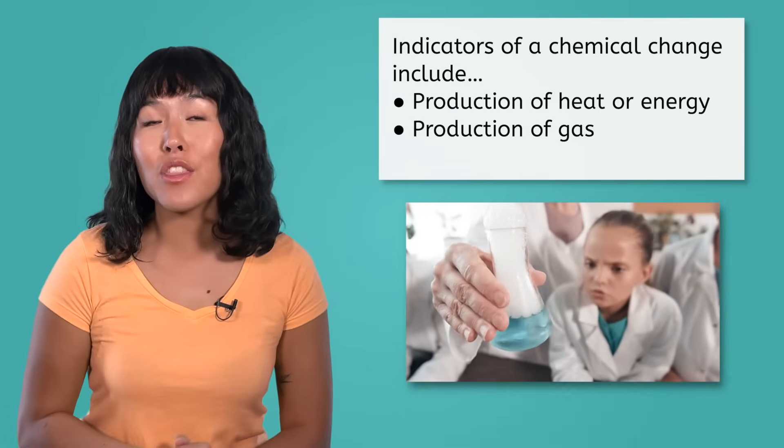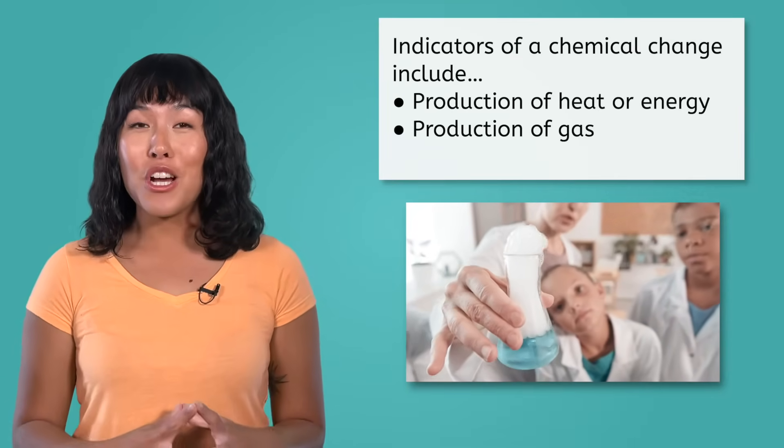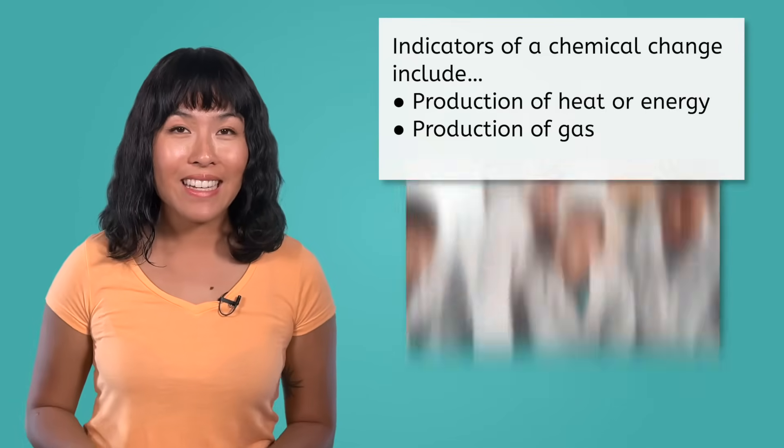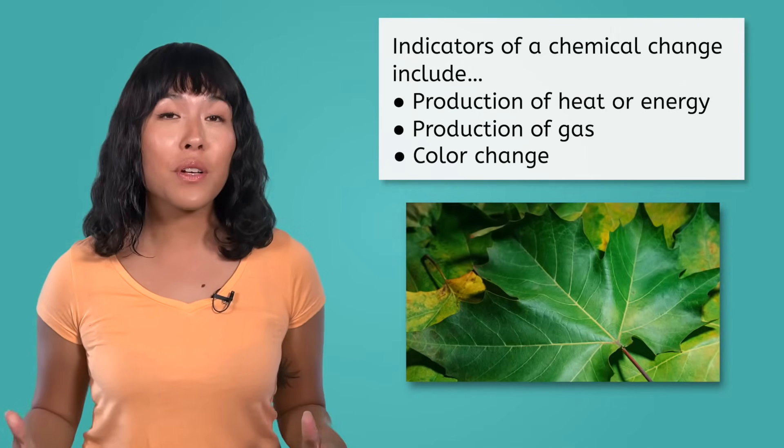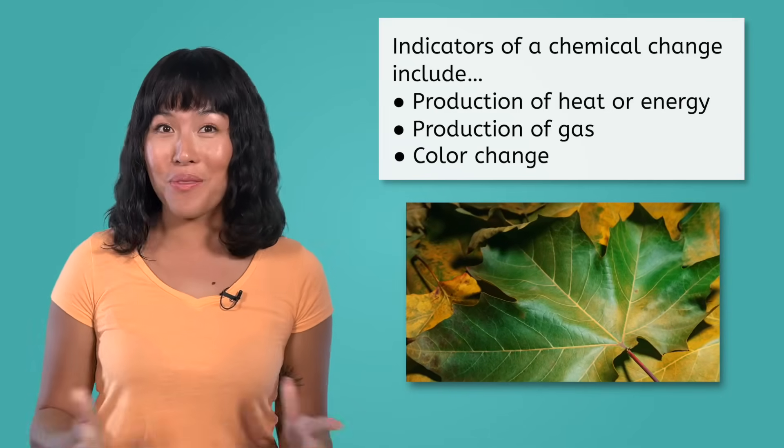Some other indicators include the production of gas in the forms of bubbles and fizzing, like adding baking soda and vinegar together to form carbon dioxide, water, and sodium acetate, and when leaves convert chlorophyll to other pigments, causing the leaves to change color in the fall.